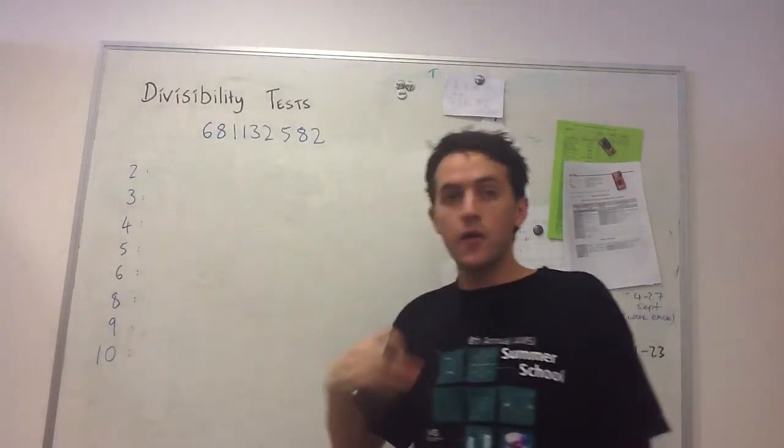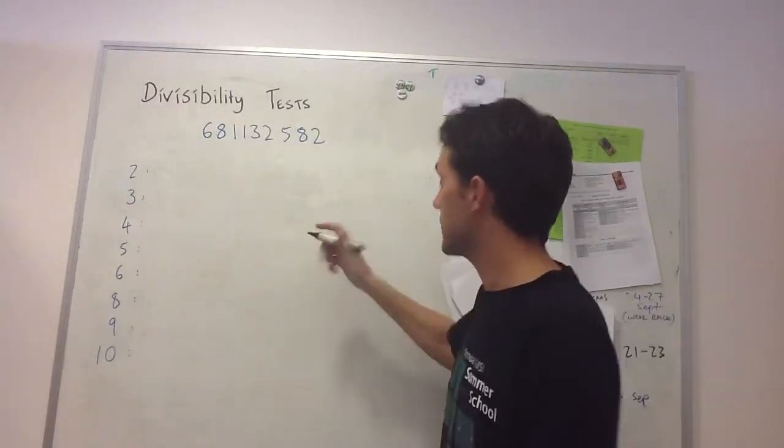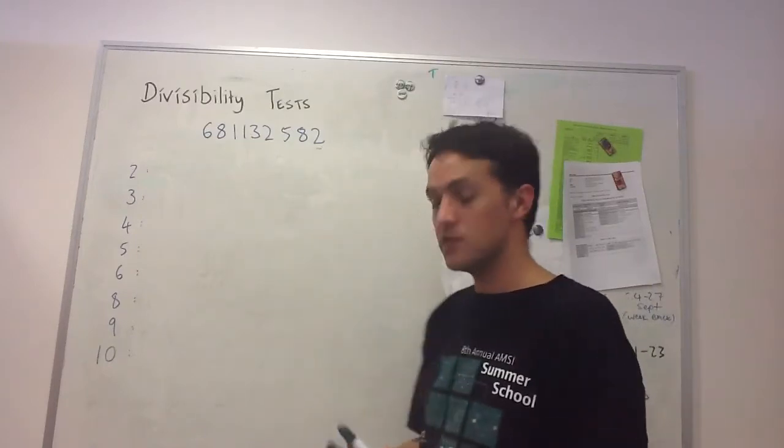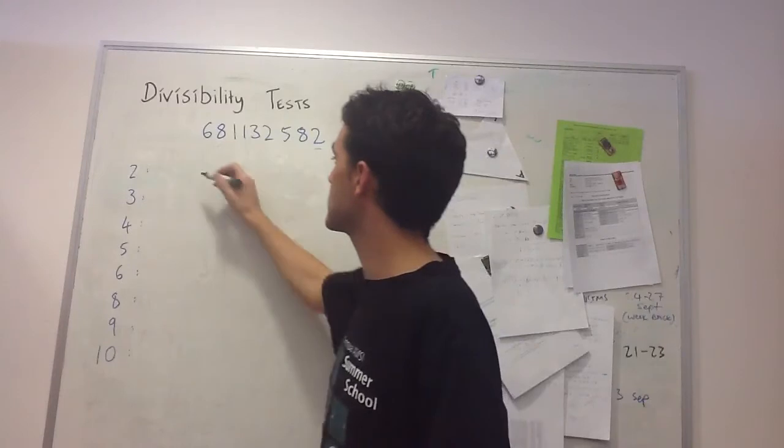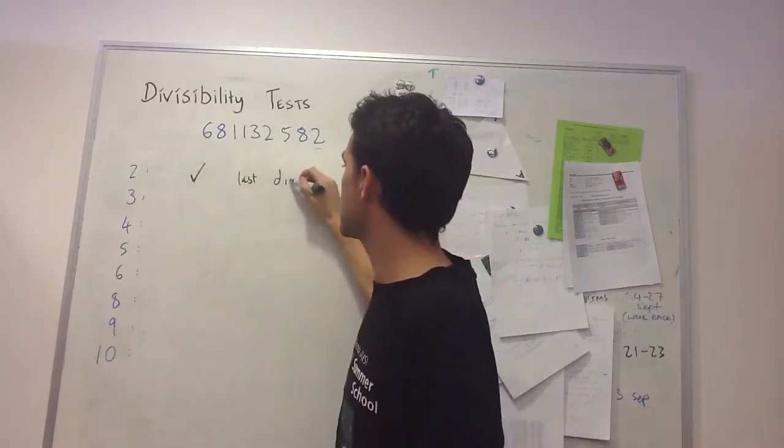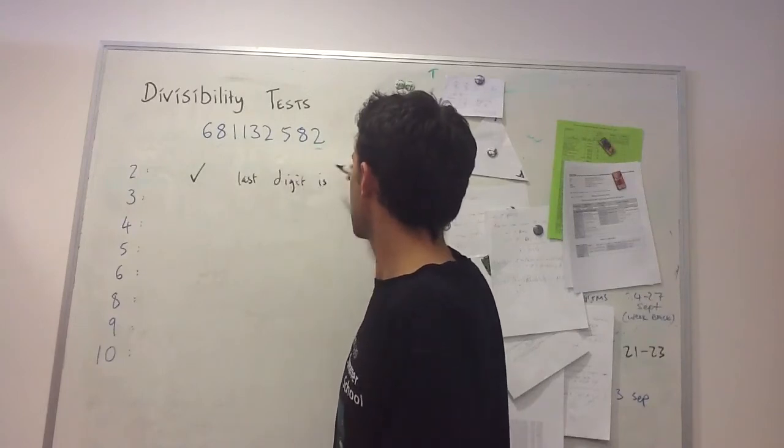For the test for 2, we only have to look at the last digit. As we can see, the last digit is a 2, so the number is even and divisible by 2.